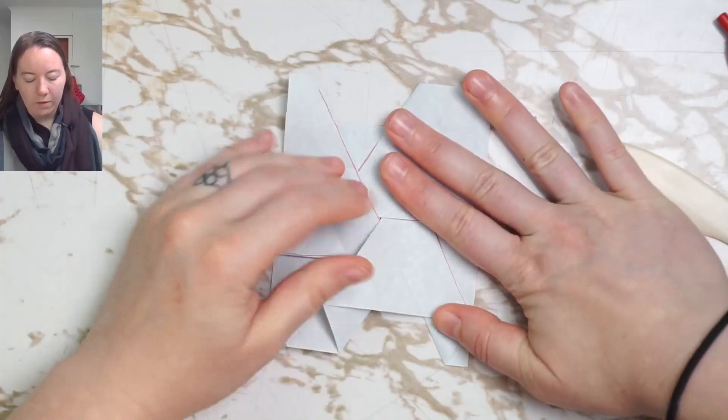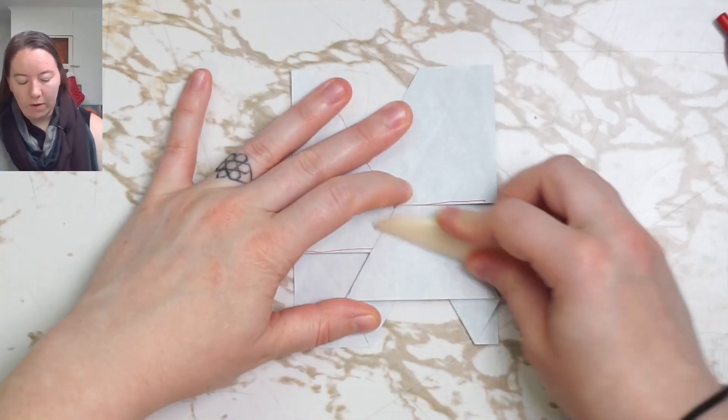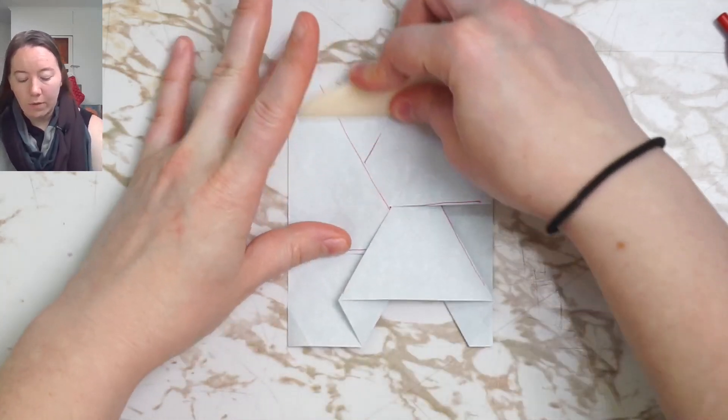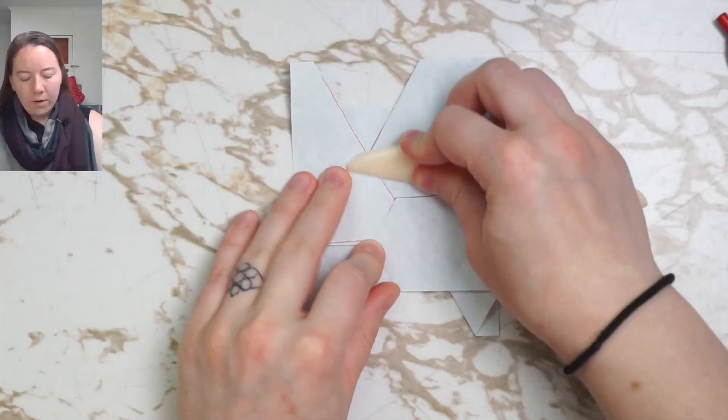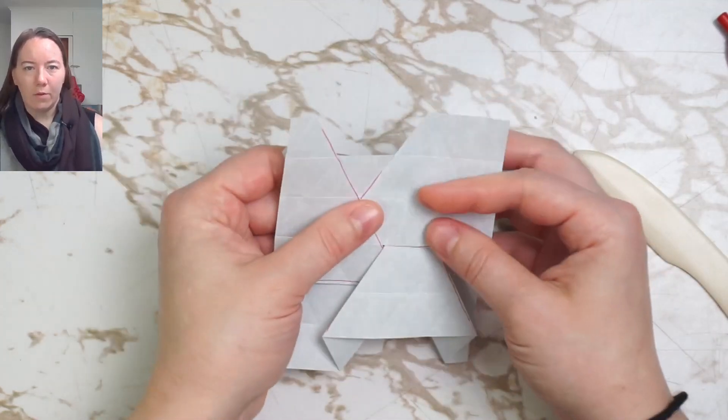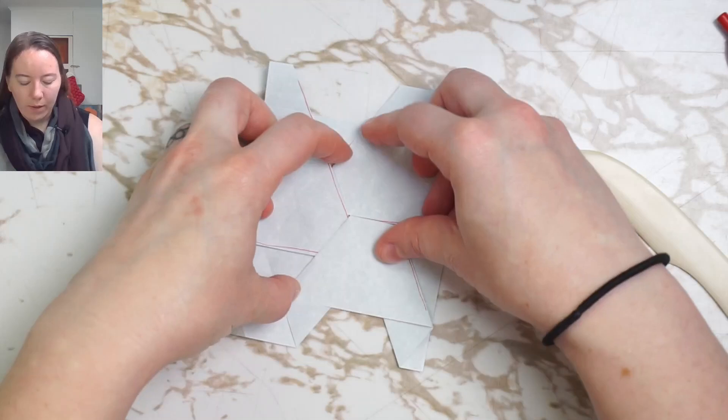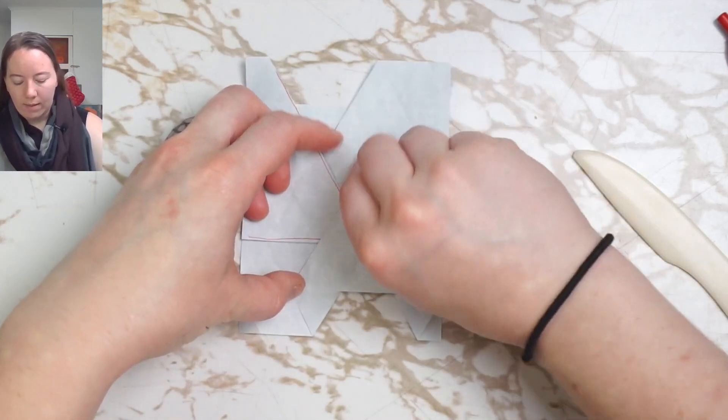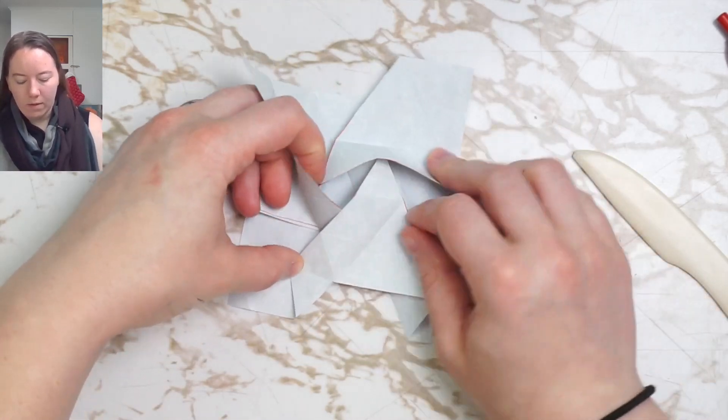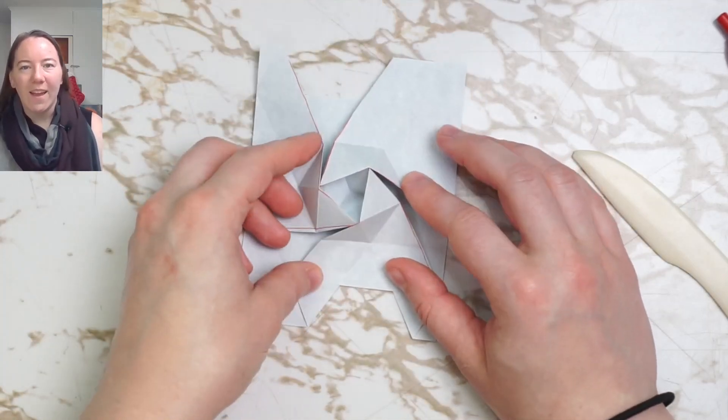So that's what's going on with the iso area closed hexagon twist. And here I'm using my bone folder just to help things lay a little bit flatter and resolve any tension in the grid. And at this point, we can lift out those corners and make this puffy again.